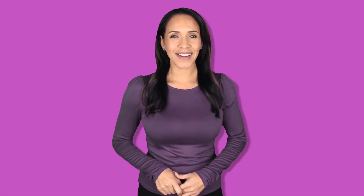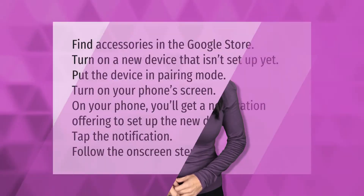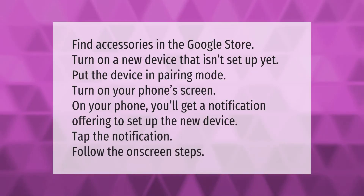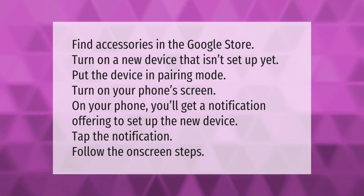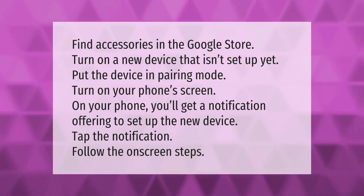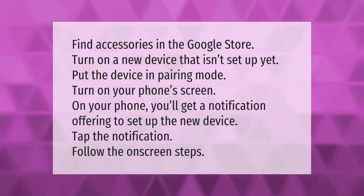Find accessories in the Google Store. To set up a new device that isn't set up yet, put the device in pairing mode. Turn on your phone screen — you'll get a notification offering to set up the new device. Tap the notification and follow the on-screen steps.